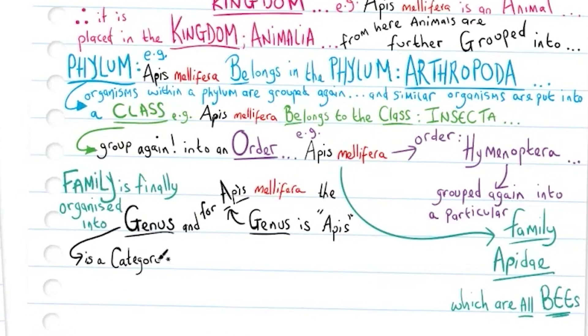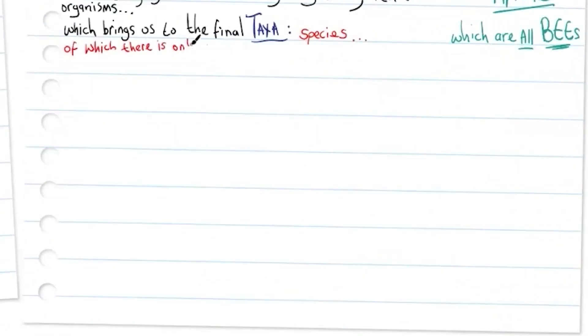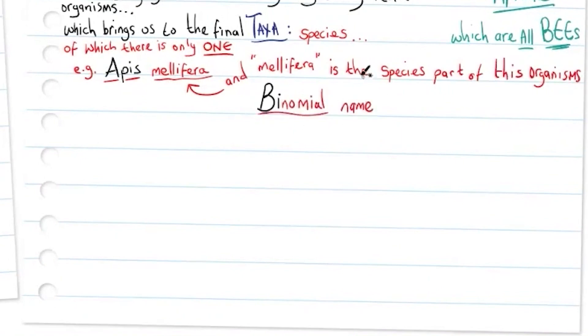Genus is a category used to classify very closely related organisms, which then brings us to the final taxa species, of which there is only one. For example, Apis mellifera, where mellifera is the species part of this organism's binomial name.